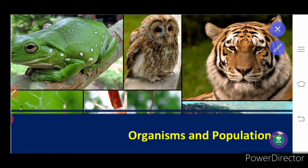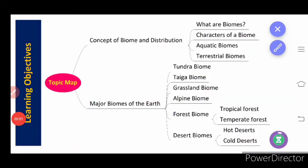Today we will be learning about biomes. In this session we will cover the definition of biome, its distribution, characteristics of biome, aquatic biome, and terrestrial biome. Major biomes of the earth can be classified into tundra, taiga, grassland, alpine, tropical forest, temperate forest, and desert biome — including hot desert and cold desert.